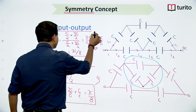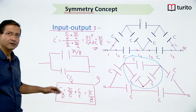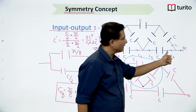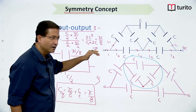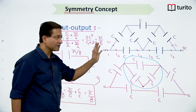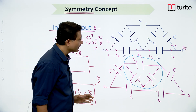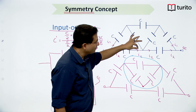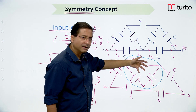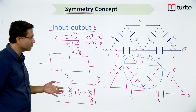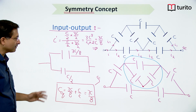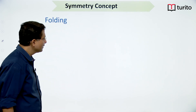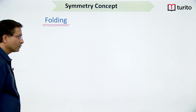In input-output symmetry our focus is on division of current: we check how current divides to identify junctions that can be opened. If junctions can be opened the whole circuit becomes simple. This is called input-output symmetry. The other type is called folding symmetry.